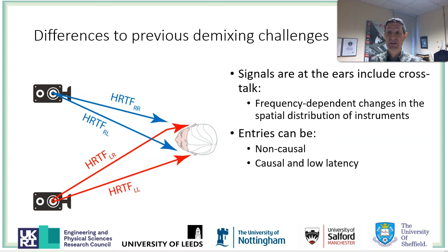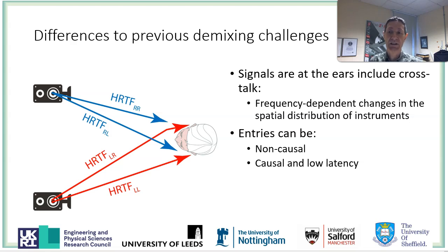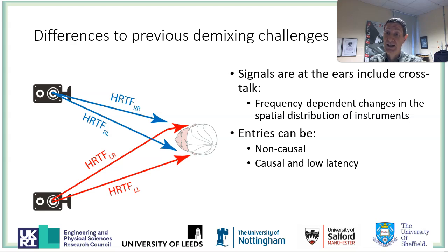Some of you may have entered demixing challenges and be wondering what's different about this one. The first thing is the signals are at the ears rather than the stereo music tracks off the downmix. That means you have crosstalk — the left loudspeaker signal goes to both the left and right ear, and that is a frequency-dependent effect. Crosstalk is stronger at low frequencies than at high frequencies, creating a frequency-dependent change in how music is balanced across the ear signals compared to the loudspeaker signals.